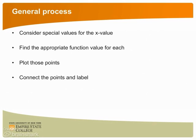First, we select some special values for the independent variable, which is x. We then find the function value for each of those values of x. This provides us with the coordinates for a number of points on the graph, which we then plot. We finish by connecting the points and labeling our graph.